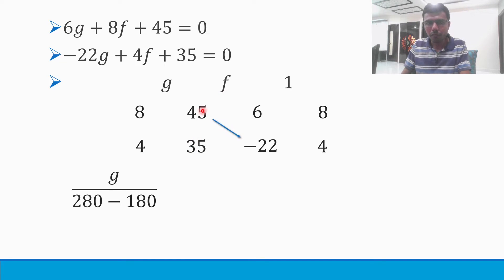Next, f divided by 45 × (-22) minus 35 × 6, which is nothing but -990 - 210.